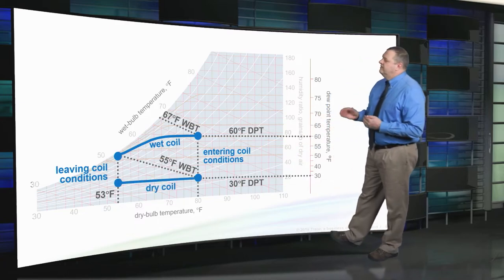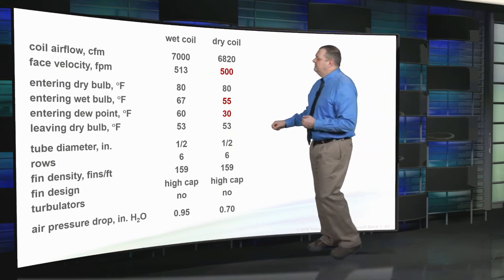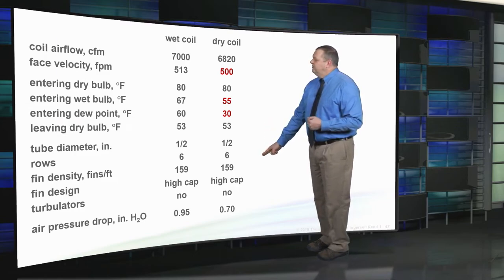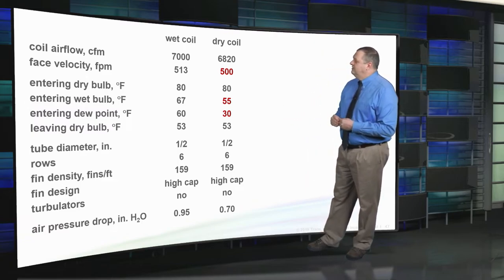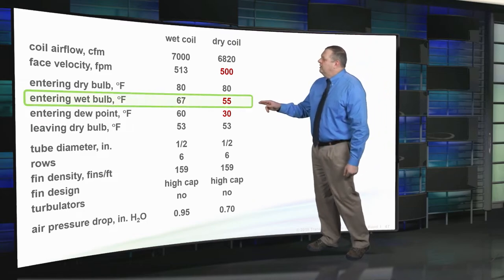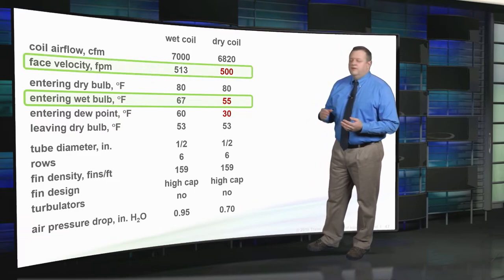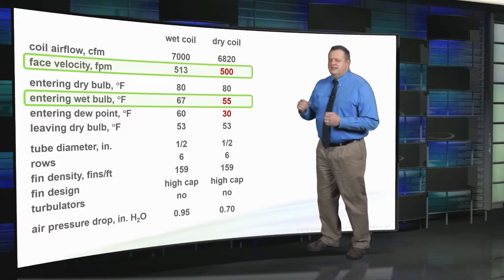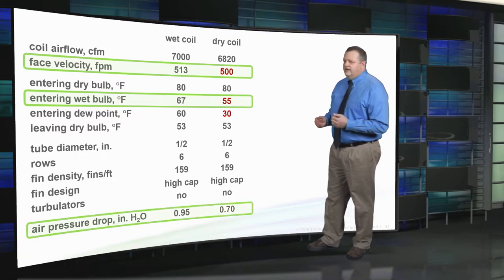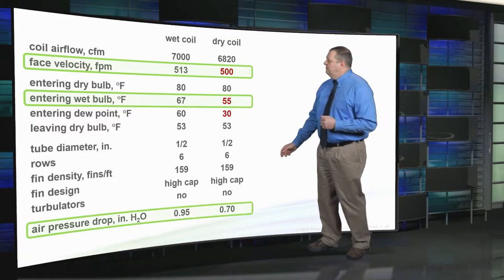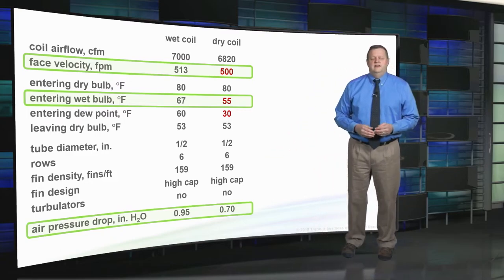To check if a selected coil complies with the ASHRAE 62.1 air pressure drop requirement, use the manufacturer's selection software and rerun the performance of the selected coil with air conditions that will cause the coil to run dry. In this case, by lowering the entering air wet bulb from 67 down to 55 degrees, the entering dew point drops to 30 — well below the coil's surface temperature — so the coil operates dry with no condensation. A 6-row coil from the previous example shows 0.95 inches pressure drop wet. Running it dry at exactly 500 feet per minute, the air pressure drop is 0.70 inches, which complies with the Standard 62.1 limit.